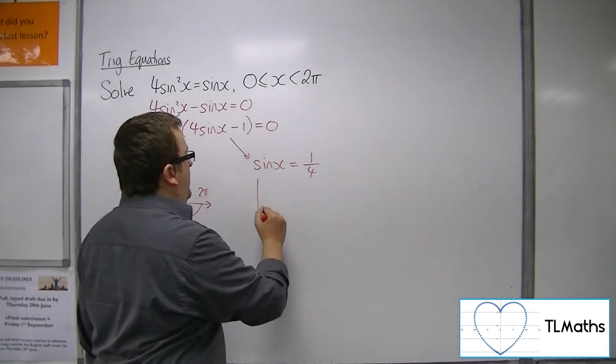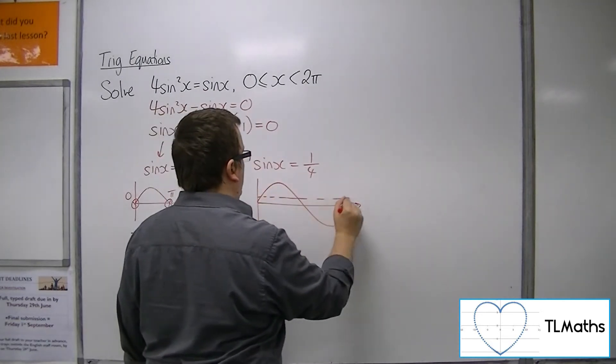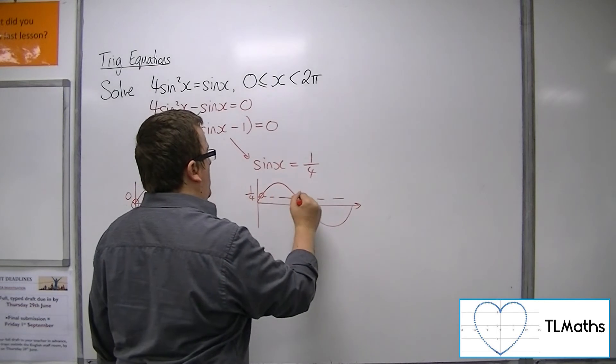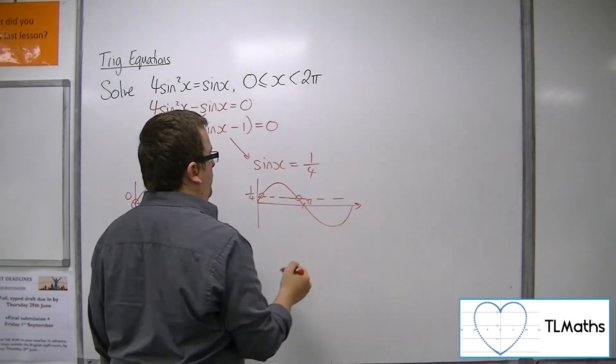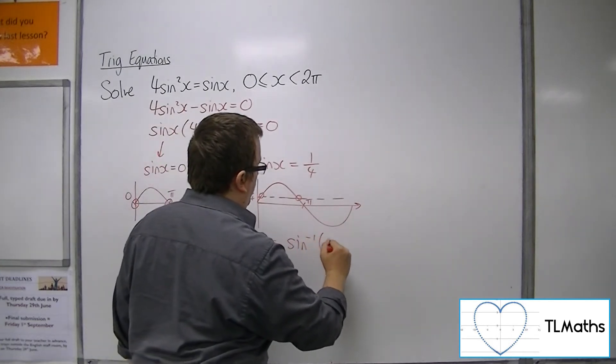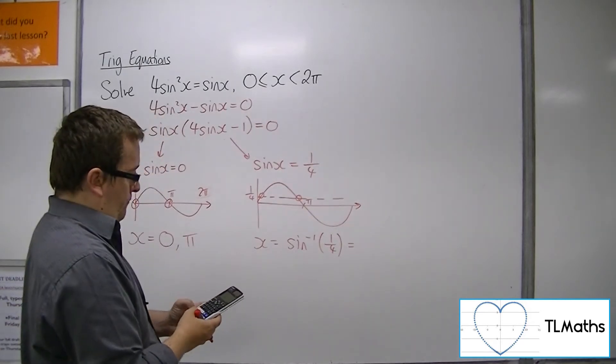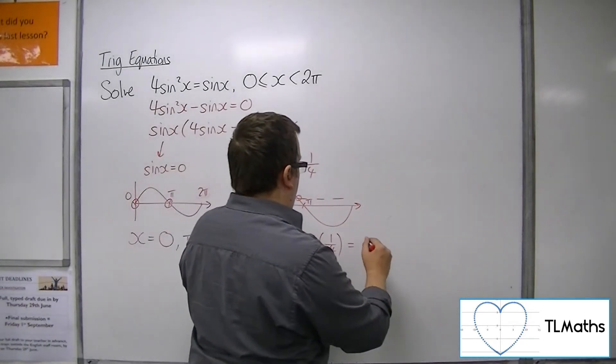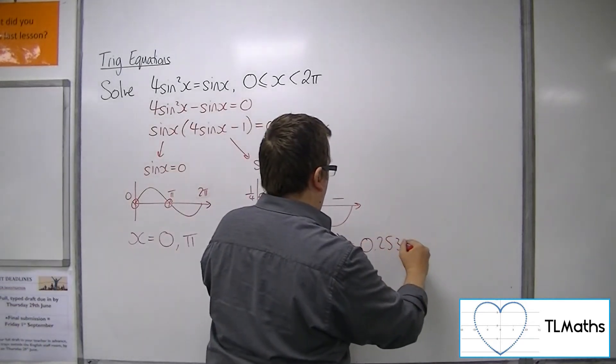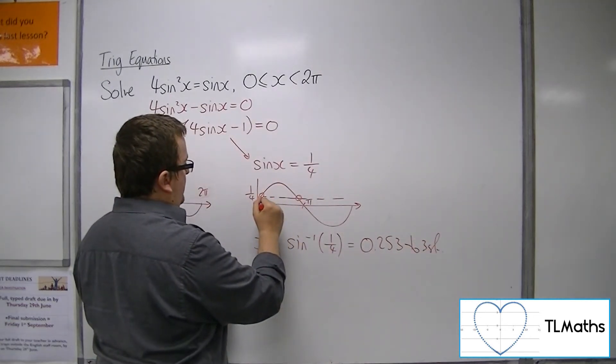Now as for sine x equals 1 quarter, our diagram identifies that there are two solutions between 0 and 2 pi. So the first solution is the inverse sine of a quarter, which is 0.253 to three significant figures. So that is that distance there.